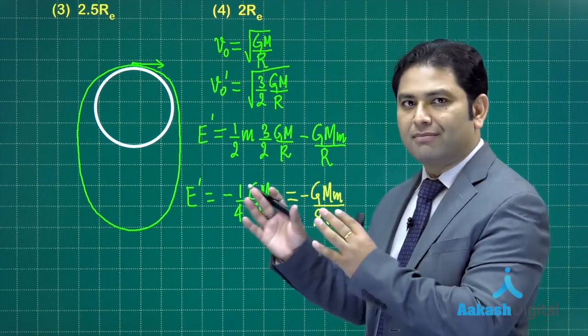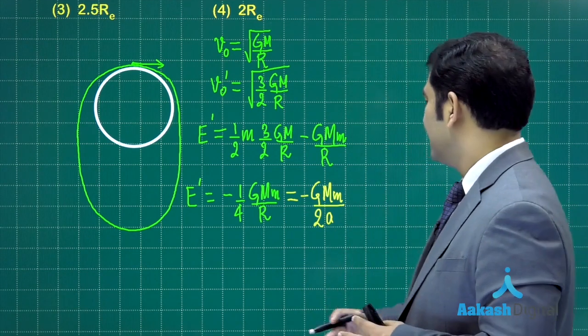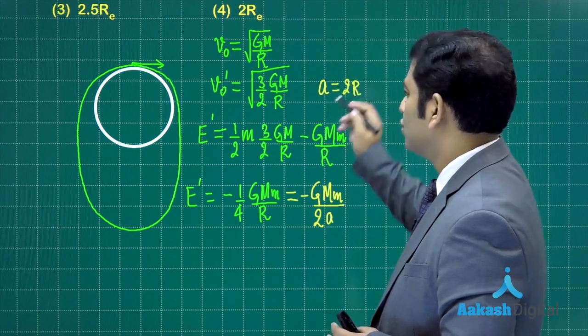This mechanical energy can be equated to minus of GMM by 2A, where A is the semi-major axis. You know the total mechanical energy in an elliptical orbit. This is going to give me the value of A, the semi-major axis, as 2R.